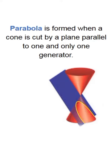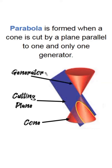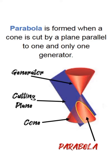Suppose this is the two right circular cones. This is the cone. This is the cutting plane. This is one generator of the cone. The cutting plane is parallel to that generator. The section formed is the parabola. The cutting plane should be parallel to one generator; otherwise, a circle or ellipse will be formed.